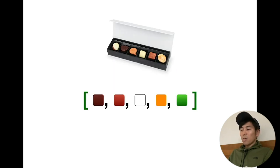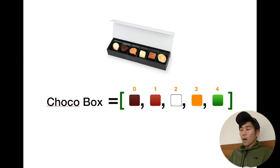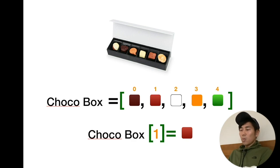The order that you need to remember is that first it starts from zero. So if you want to call the chocolate box and take something out of it, let's say chocolate box [1] will correspond to the second one - milk chocolate - and it will give you that milk chocolate. So that's an array.